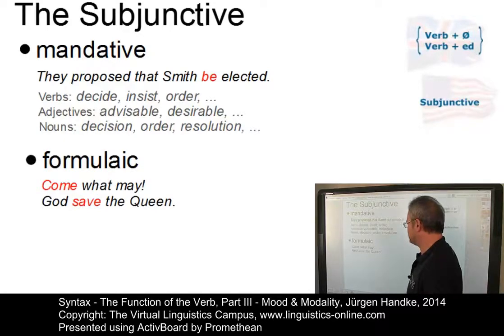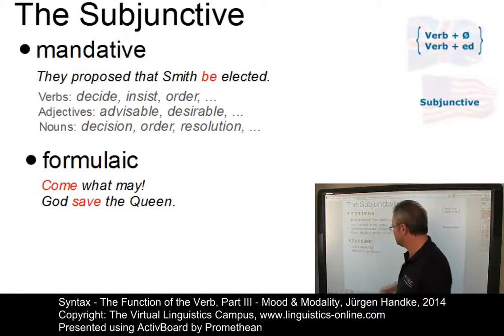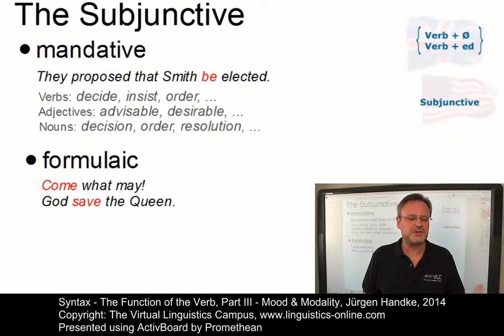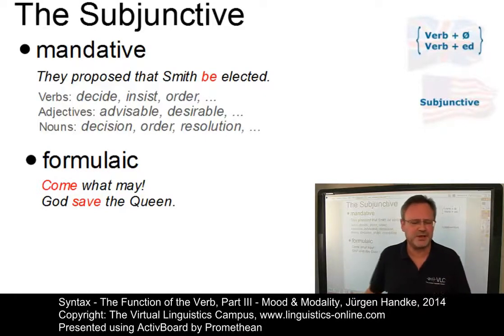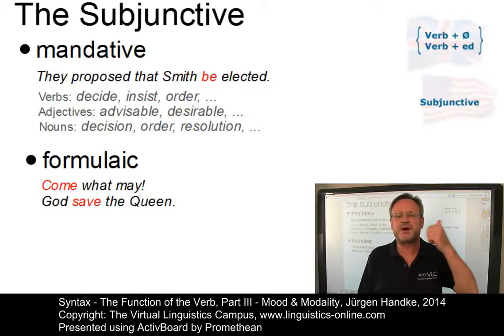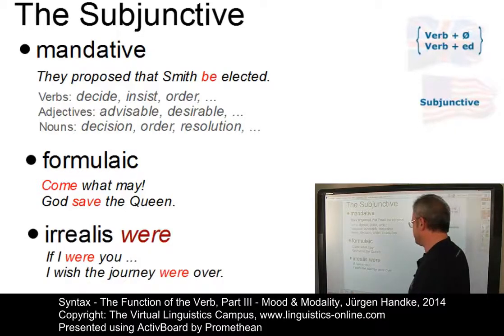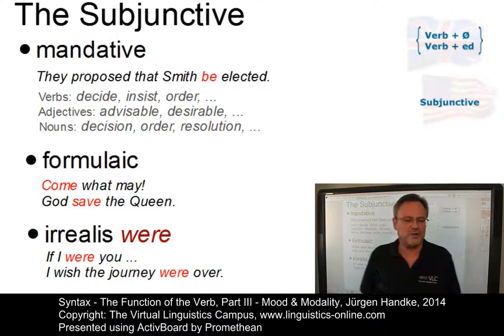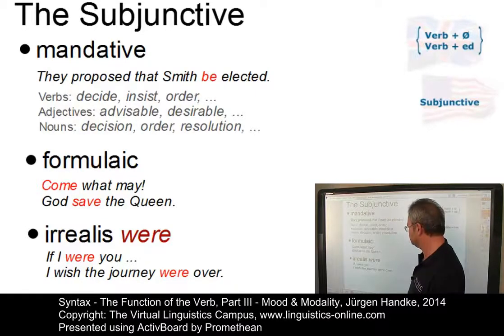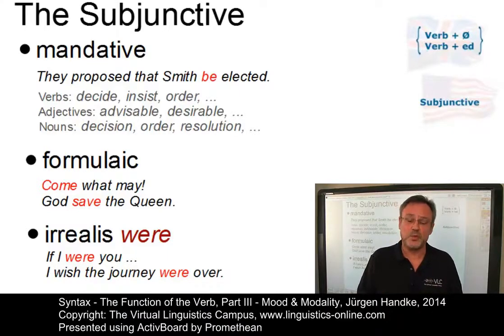Then there is the formulaic subjunctive, as in 'come what may' and 'God save the Queen'. The formulaic subjunctive is found in independent clauses in contextually restricted formulaic expressions. After verbs like 'wish' or in adverbial clauses introduced by 'if', 'as if', 'as though', or 'though', the subjunctive is realized as the so-called irrealis, restricted to the use of 'were' — for example, 'if I were you' or 'I wish the journey were over'. Note that in speech, 'were' is often replaced by the indicative form 'was'.